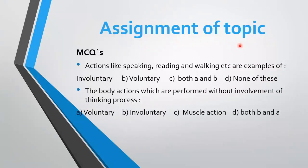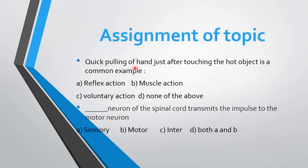Assignment MCQs: (1) Actions like speaking, reading, and walking are examples of: A) involuntary, B) voluntary, C) both A and B, D) none of these. (2) Body actions performed without involvement of thinking process are: A) voluntary, B) involuntary, C) muscle action, D) both B and A. (3) Quick pulling of hand just after touching a hot object is a common example of: A) reflex action, B) muscle action, C) voluntary action, D) none of the above. (4) Which neuron of the spinal cord transmits the impulse to the motor neuron? A) sensory, B) motor, C) interneuron, D) both A and B.